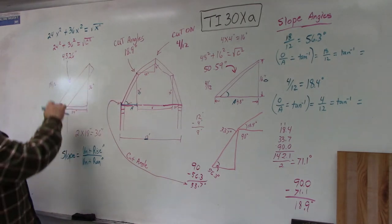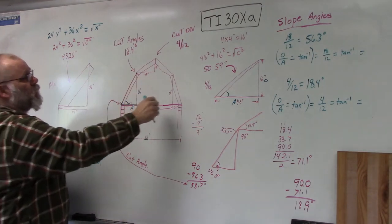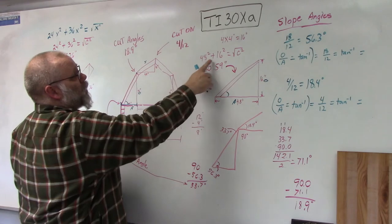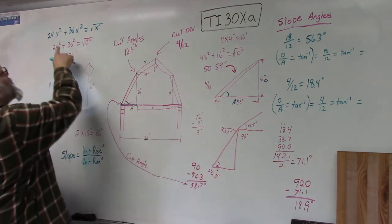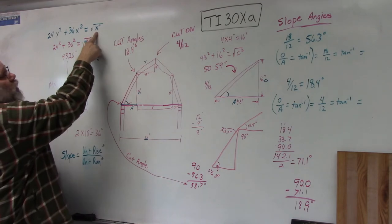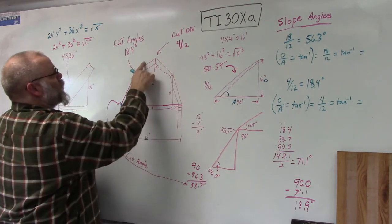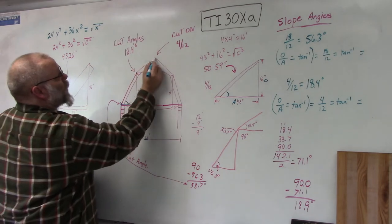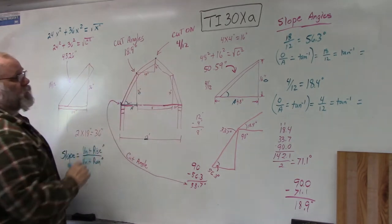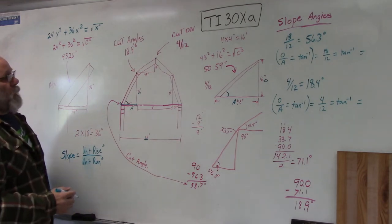Now I'm going to find my other length. This time I use 48² + 16² gives me c². Put it in the same way - the number x² plus the number x² equals, then hit the square root button. It will give you 50.59 inches. Since this is symmetrical, this one equals that one and this one equals that one, so you've already figured out all four rafter lengths.